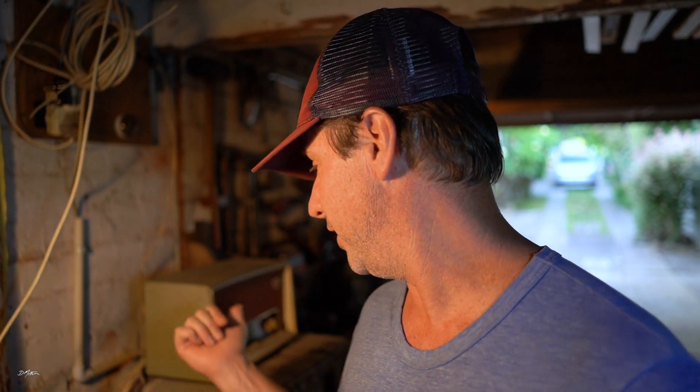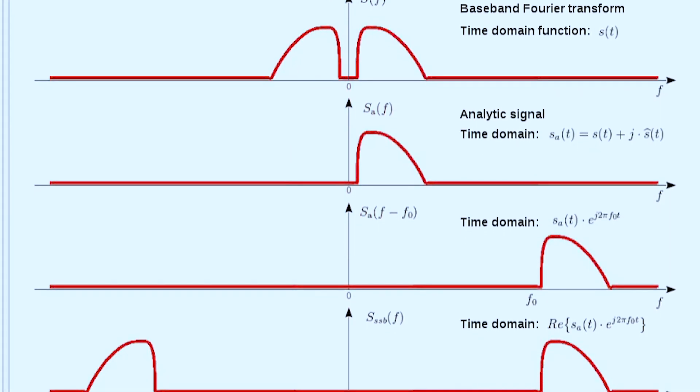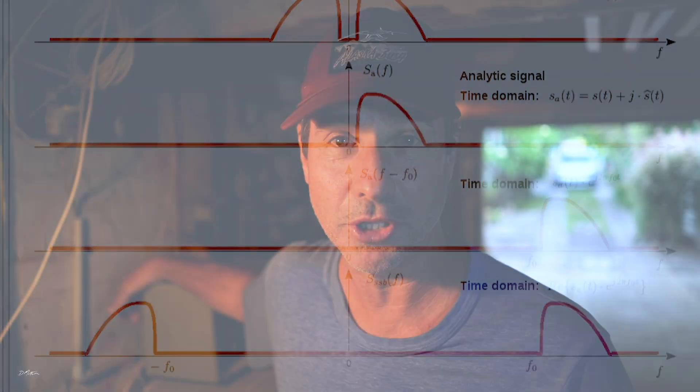What I'm doing back there is receiving an SSB signal with an AM-only radio from the 1940s. Demodulating SSB, or single sideband, requires what's known as a product detector — just another stage of heterodyning. But this radio does not have a product detector, so it's not capable of SSB demodulation natively. To demodulate SSB on an AM radio, you require an external signal known as the beat frequency oscillator, which gets introduced into the additional heterodyning stage.